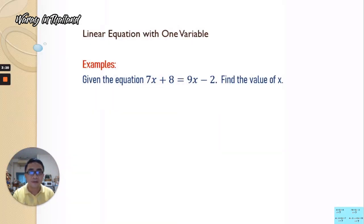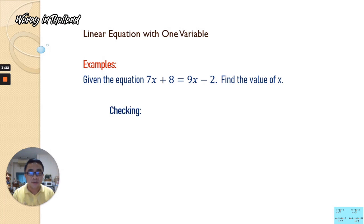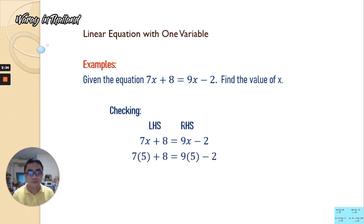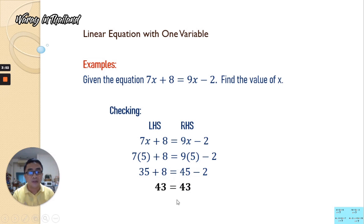For the checking, we substitute the value of x into our equation. We have 7 times 5 plus 8 is equal to 9 times 5 minus 2. So 7 times 5 is 35, plus 8 equals 43; and 45 minus 2 is also 43. Both sides are equal, so therefore we confirm that the value of x is really equal to 5.